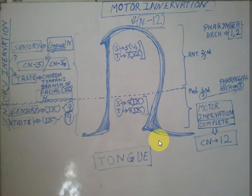As you can see on your screen, I've tried to make the tongue in the shape of the number 12. This number 12 represents mainly two things, but first it represents that the whole motor innervation of the tongue is through cranial nerve 12, the hypoglossal nerve. All the muscles of the tongue — anterior portion, posterior portion — the entire motor innervation is through cranial nerve 12.